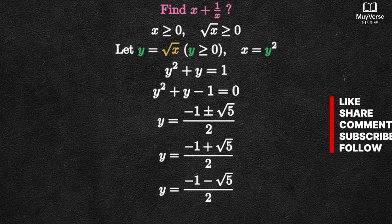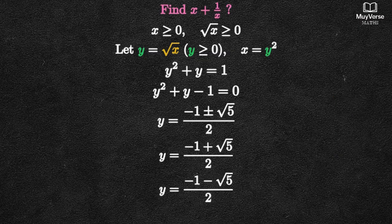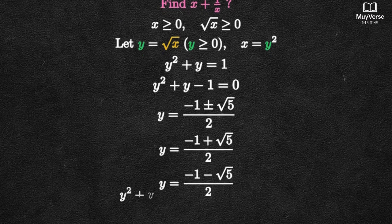Now, instead of immediately squaring to find x, there is a faster identity path. From y squared plus y equals 1, we can factor the left side.